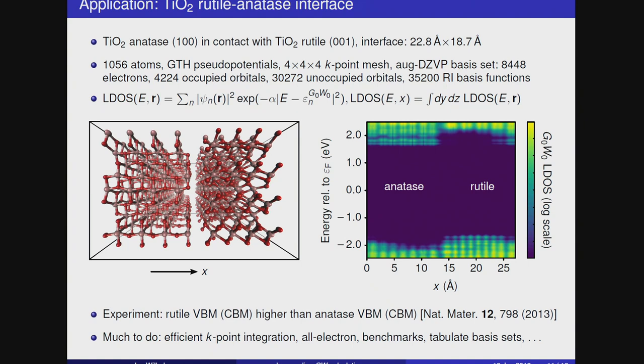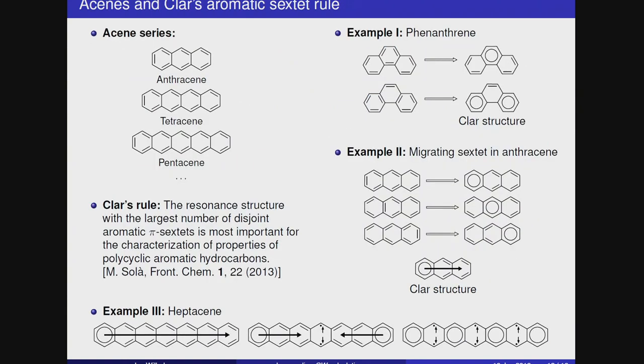This causes, now electrons and holes cannot quickly recombine anymore because they are separated and it enhances catalytic activity because you have many electrons and many holes in the material. It has been found in experiments that actually this level alignment between anatase and rutile was 0.5 electron volts. So it somehow matched experiments. But, of course, there is much to do. One has to do more efficient k-point integration. This is not yet fully converged with k-points. Also, one could do all-electron calculations because there is no actually need for pseudopotential. One has to do benchmarks how big this cell has to be and finally it would be cool to have a set of basis sets to do routine calculations.